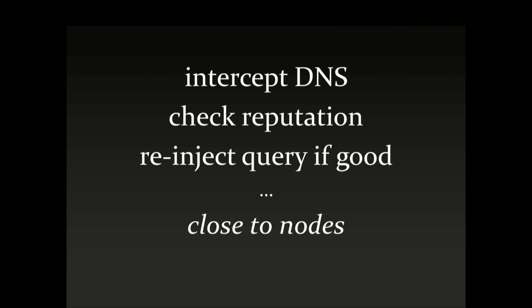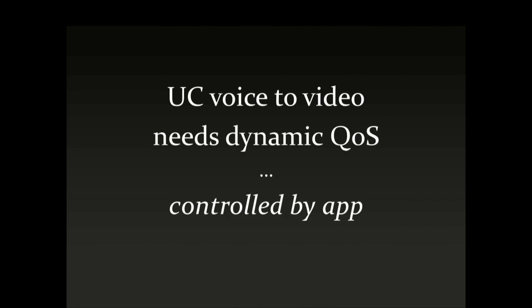So maybe we can finally get the complete set of abstractions needed to start thinking about infrastructure becoming a function of the application. Some examples might include the ability to intercept a DNS query, check it against a reputation database, re-inject the query if it's good or drop it if it's bad — and we want to do this as close as possible to the nodes performing the DNS query, not backhaul it all the way to some central location. Another example might be your universal communicator, whatever it happens to be.